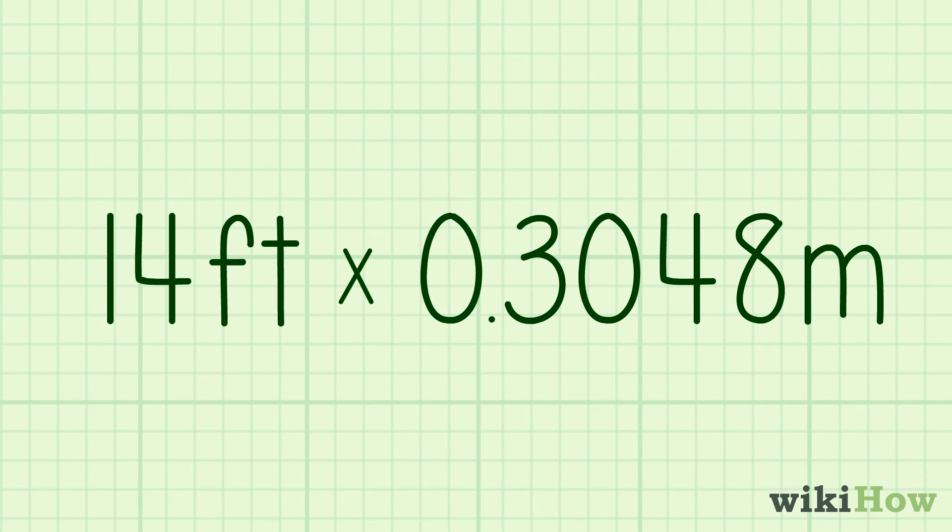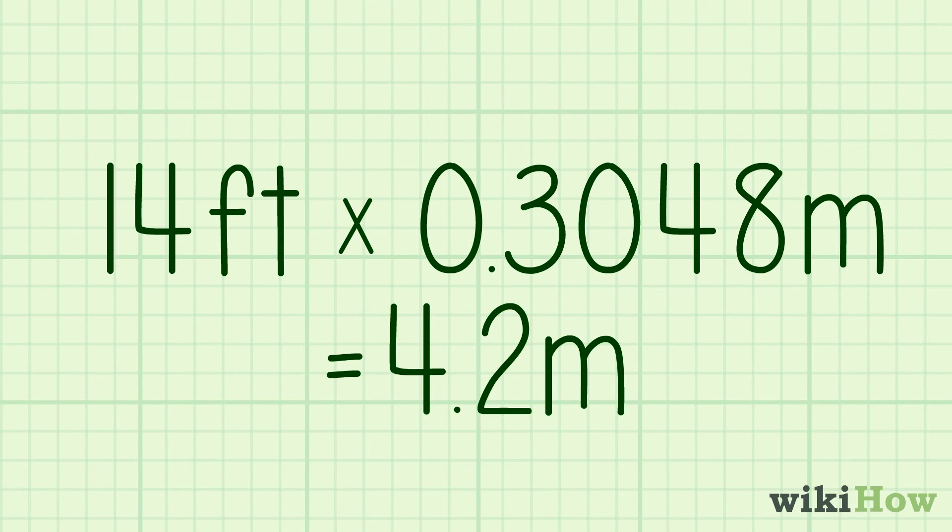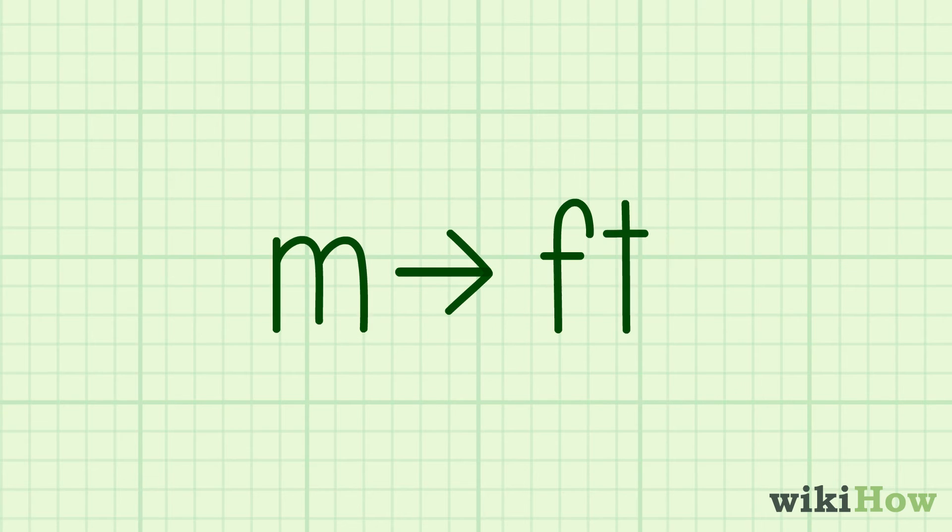For example, if you measure the length of something to be 14 feet, you'd multiply 14 by 0.3048 to get 4.2 meters. To convert meters to feet,